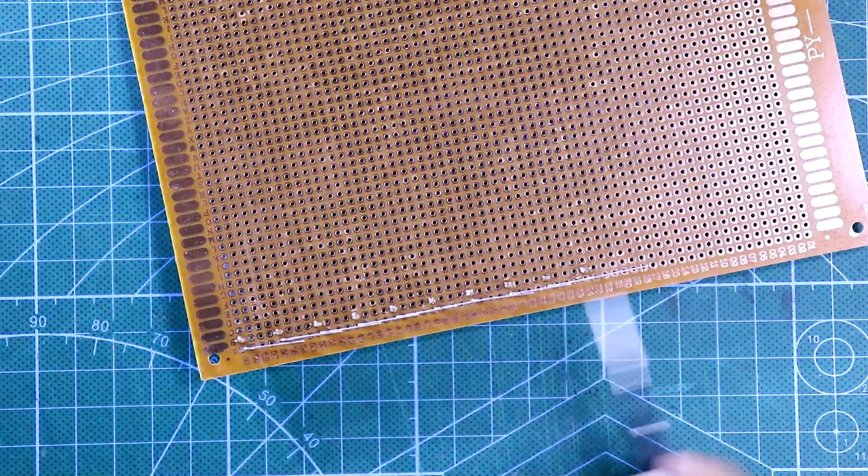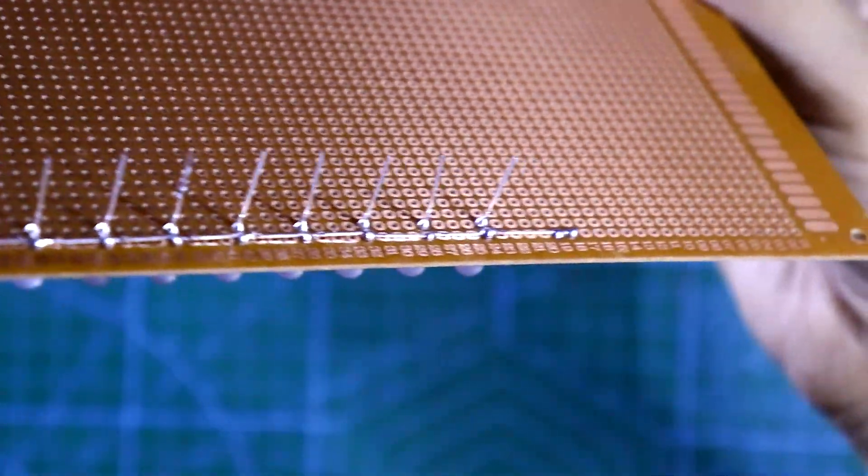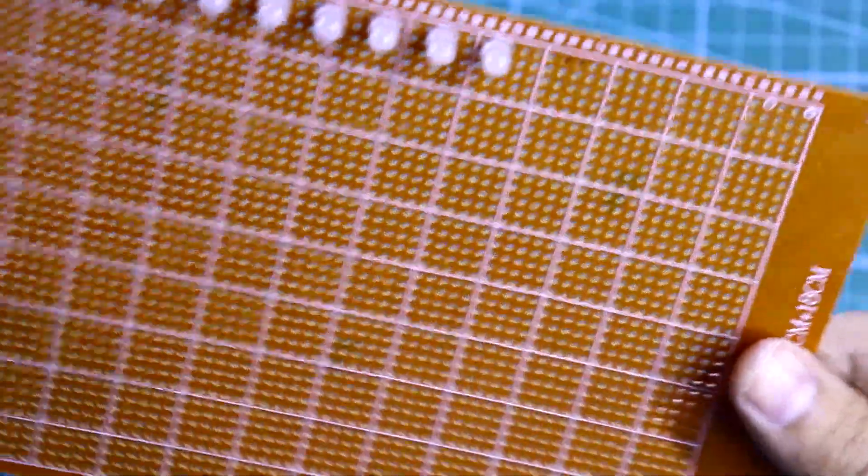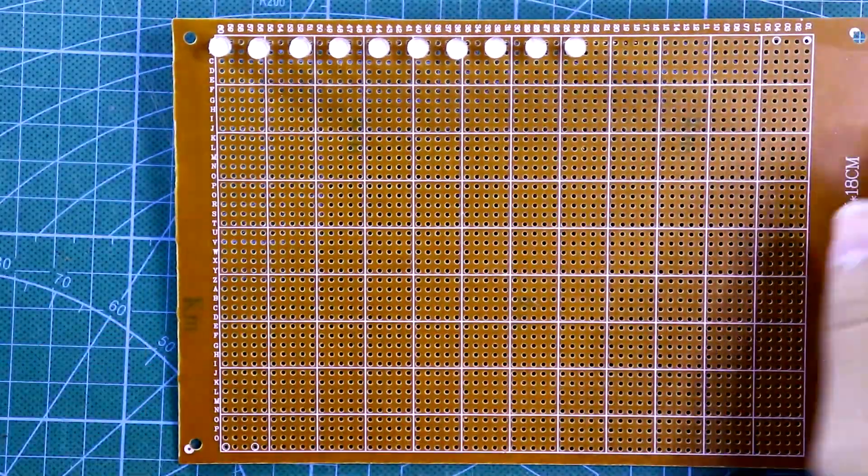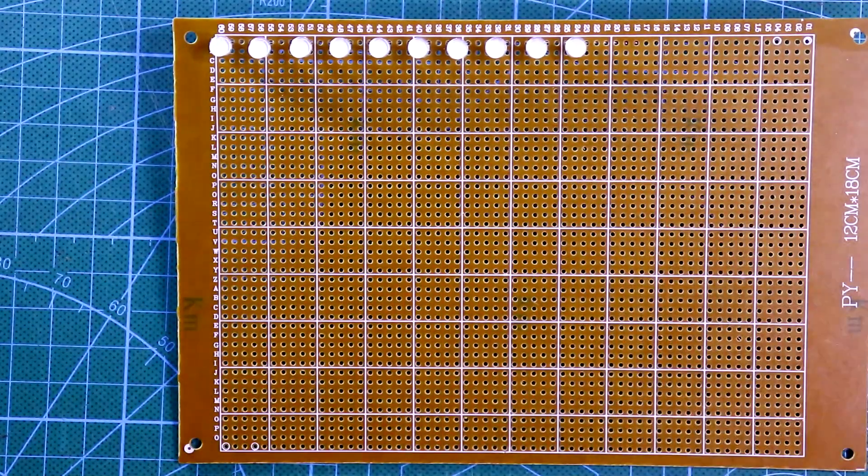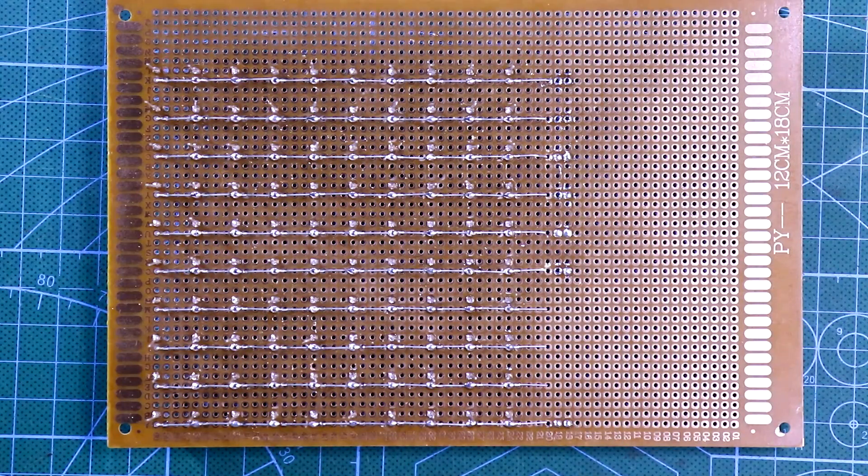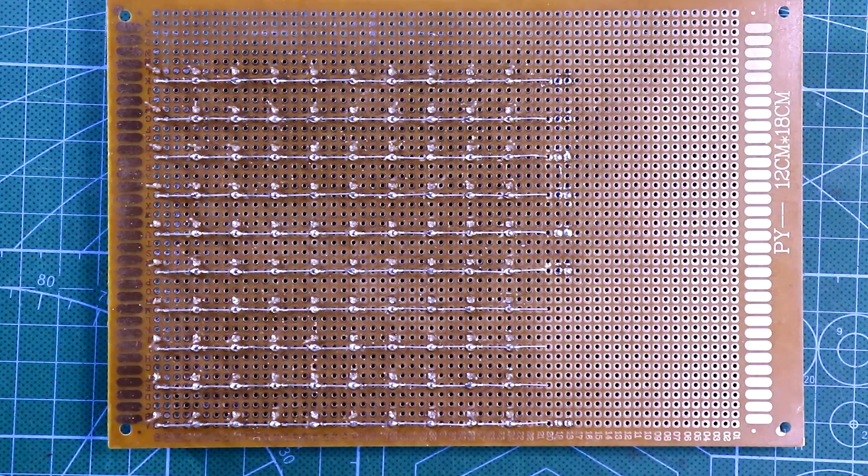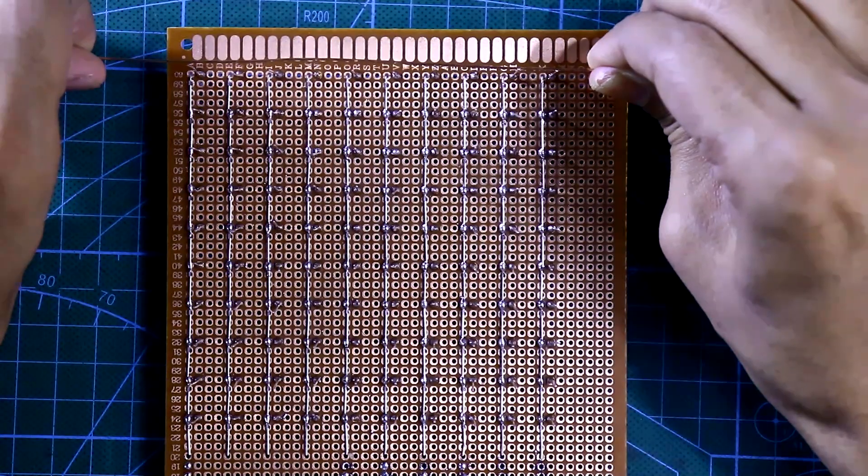Now we have to solder this. This is done. Now we have to repeat this process nine more times to complete 10 LED rows. I have soldered all the positive pins of the LEDs. Now we have to connect the negative rail.